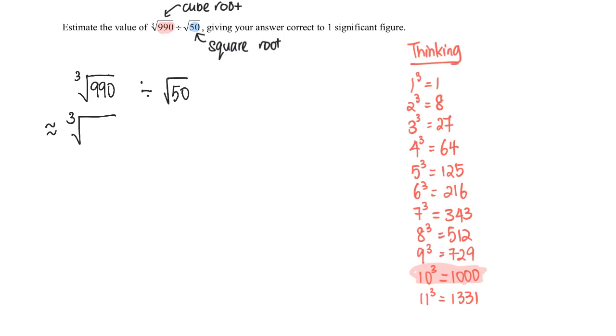Cube root of, we just found out, 1000. And of course now we do need to find the perfect square that is closest to 50.